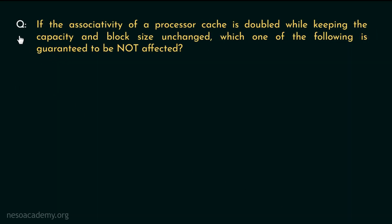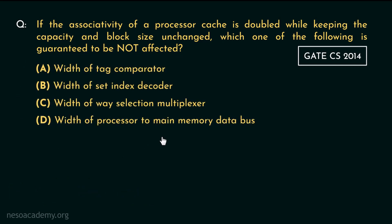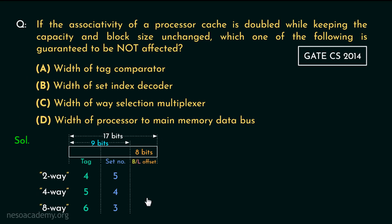Now consider this question from the GATE Computer Science 2014 paper: if the associativity of a processor cache is doubled while keeping the capacity and the block size unchanged, which one of the following is guaranteed to be not affected? Option A suggests the width of the tag comparator is not going to be affected. However, we observed that when 2-way was doubled to 4-way the tag values increased, and similarly for 8-way the tag also increased. Therefore the width of the tag comparator will be affected, so option A cannot be the correct choice.